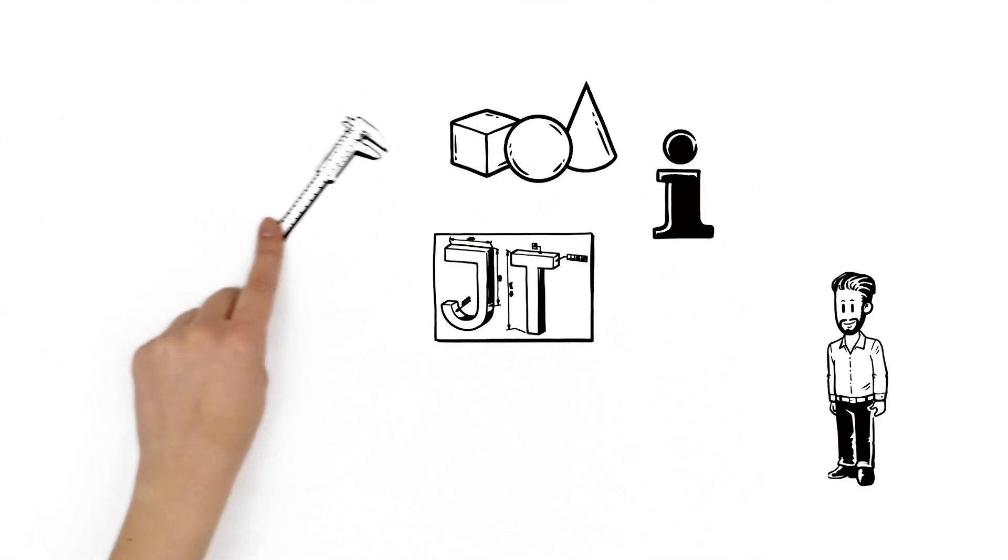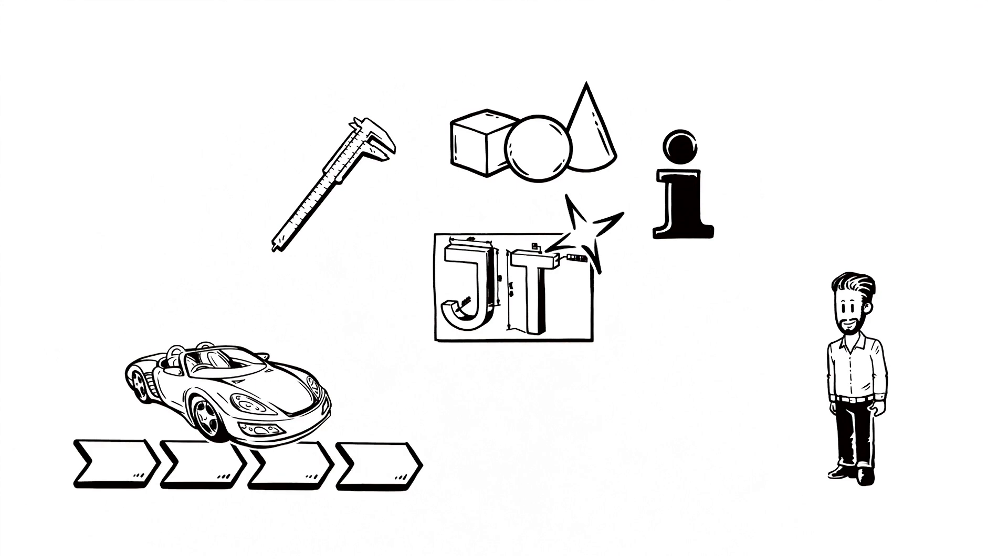That's why Marco uses the JT format. It can carry geometry attributes and PMI information, making it the perfect format to serve as a digital 3D backbone for the entire product lifecycle.